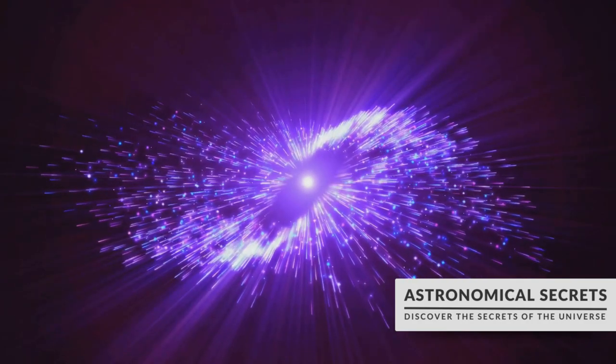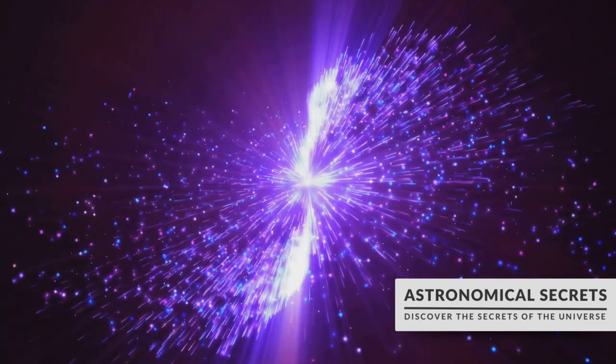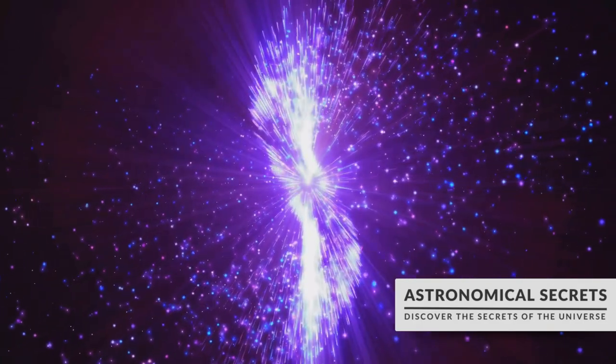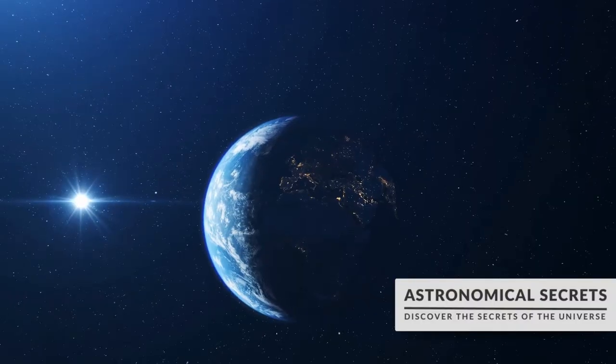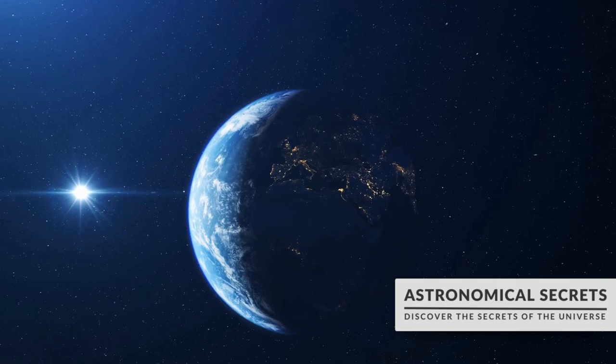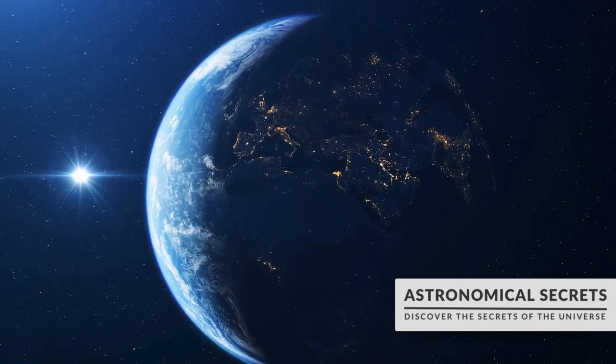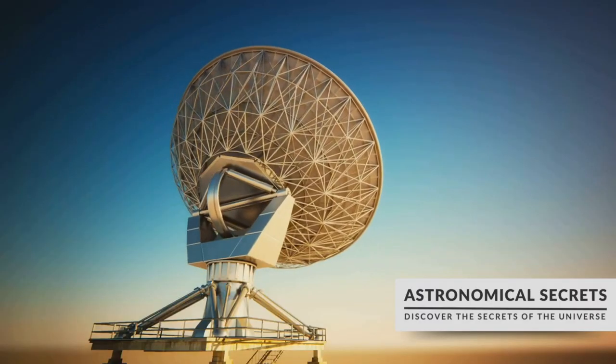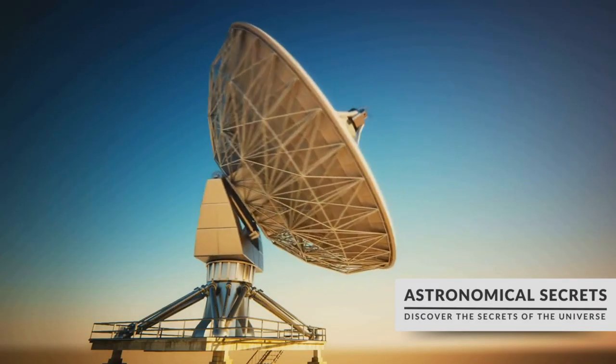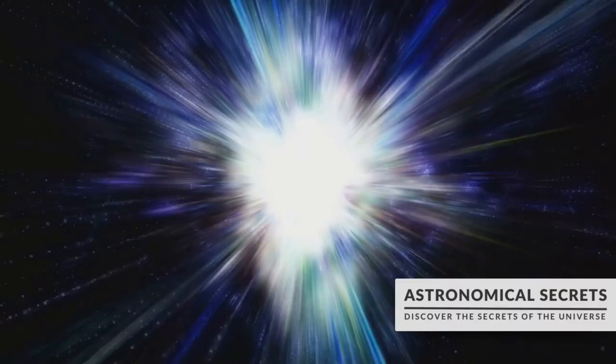But here's the fascinating part. The magnetic axis of a pulsar doesn't align with its rotational axis. Think of it like the hands of a clock that aren't perfectly lined up. So, as the neutron star spins, these beams of radiation sweep across the universe, much like a lighthouse casting its beams across the sea. And when these beams point towards Earth, we detect them as pulses of radio waves.